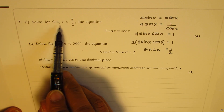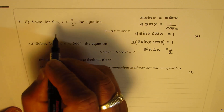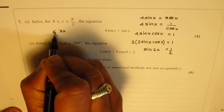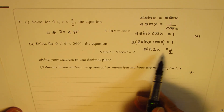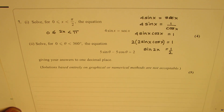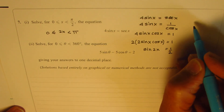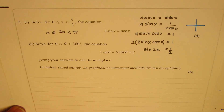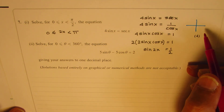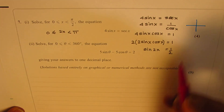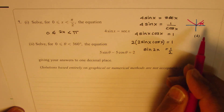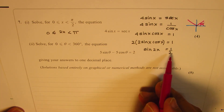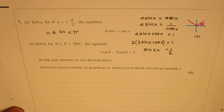As far as the interval goes, we are given x is between 0 and π/2, so 2x is going to be between 0 and π. We need to find where sin 2x equals 1/2. Since this is a positive value, sine is positive in two quadrants, so we are expecting two solutions.